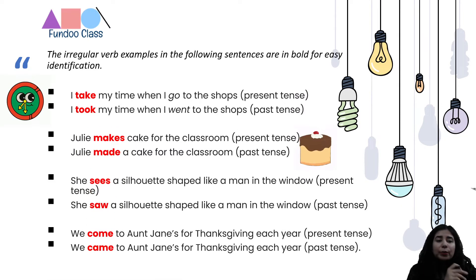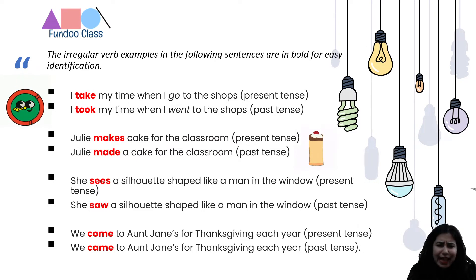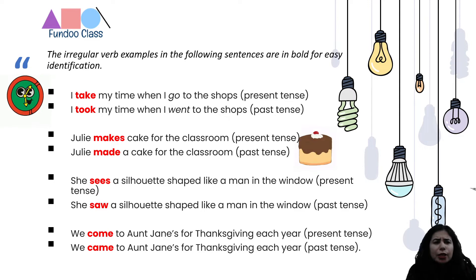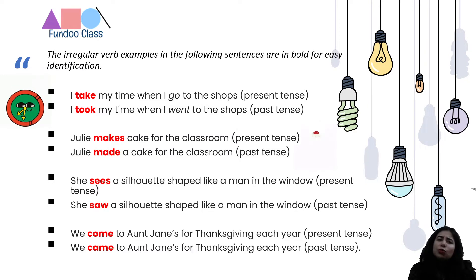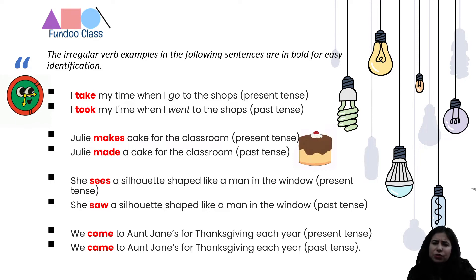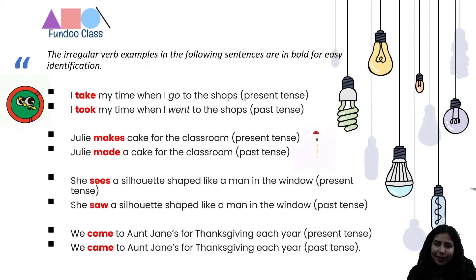Let's further proceed with the concept. We are going to see how irregular verbs function through a lot of examples. When we do a lot of examples, we really become familiar with the concept and our fear of grammar goes away. If you really want to ace grammar, I would always recommend doing a lot of examples. Practice a lot, read a lot of examples — that's going to bring such fundamental clarity that you will feel very comfortable with the concept.